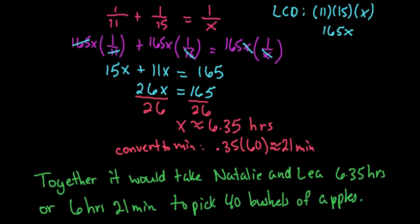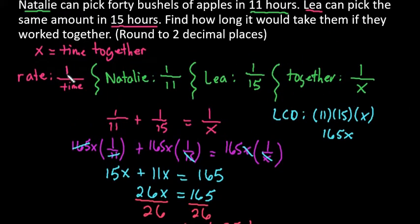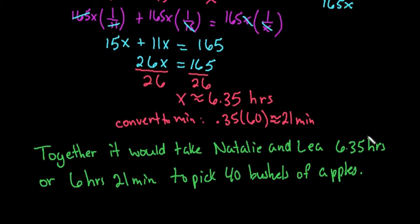So you always set them up the same. You would always go through and set up the one over the time it takes each individual person. So it would be one over the time it took Natalie plus one over the time that it took Leah to complete it equals the time together. So you always set it up the same way and then always make sure that you write your answer as a sentence so that anybody looking at this would understand what your answer represents.